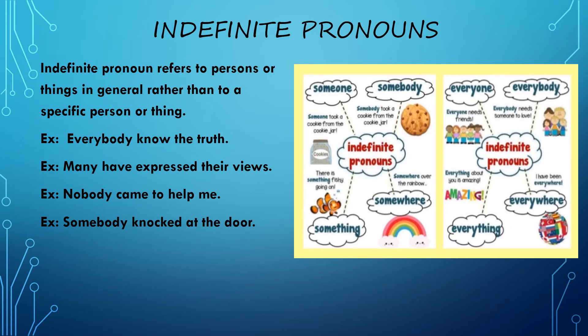Next comes indefinite pronouns. An indefinite pronoun refers to a person or things in general rather than to a specific person or thing. We talk about people in general without mentioning anyone particularly. For example: everybody knows that truth. I am not mentioning anyone specifically — I am saying it in a general sense that everyone of you knows the truth.